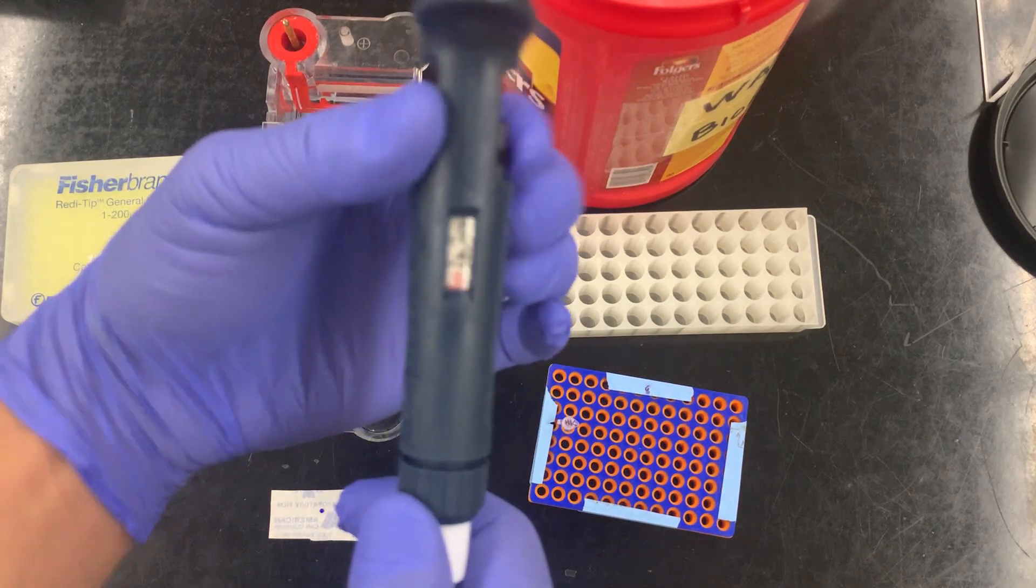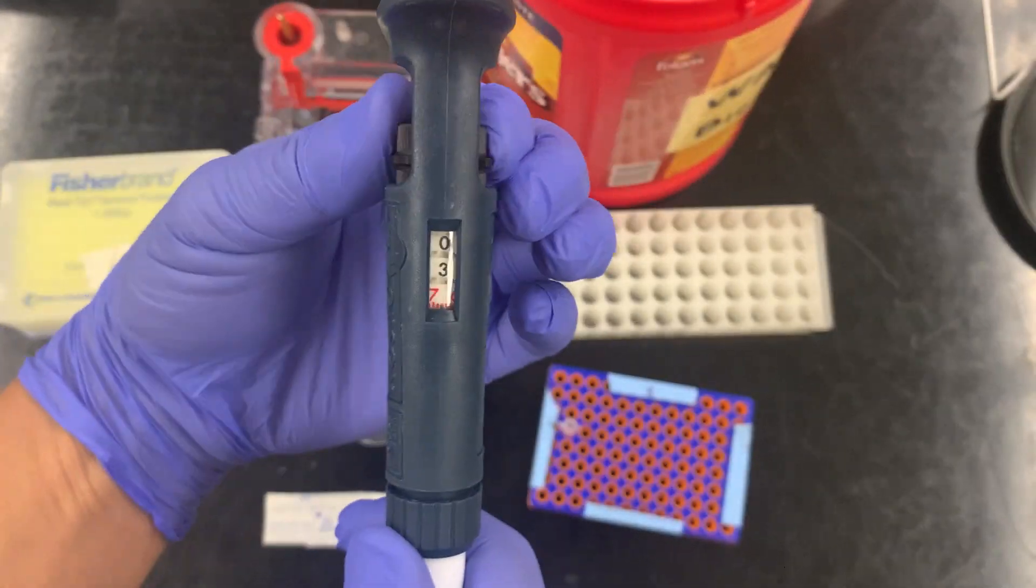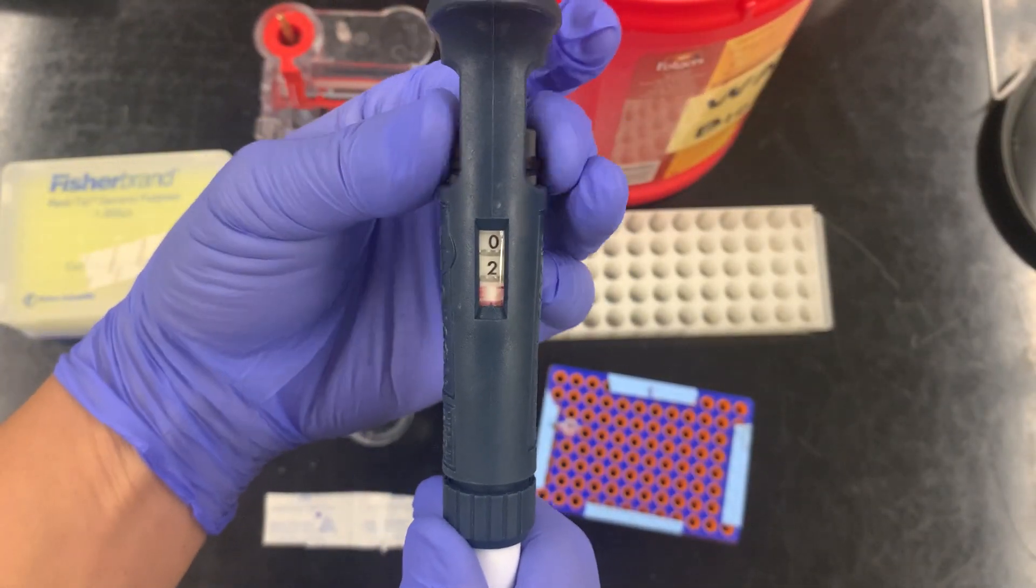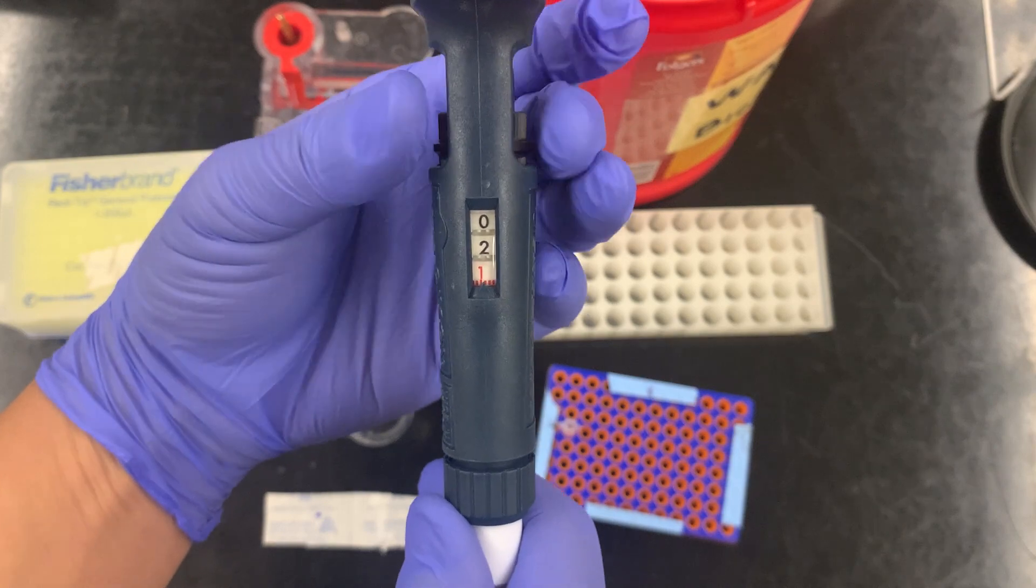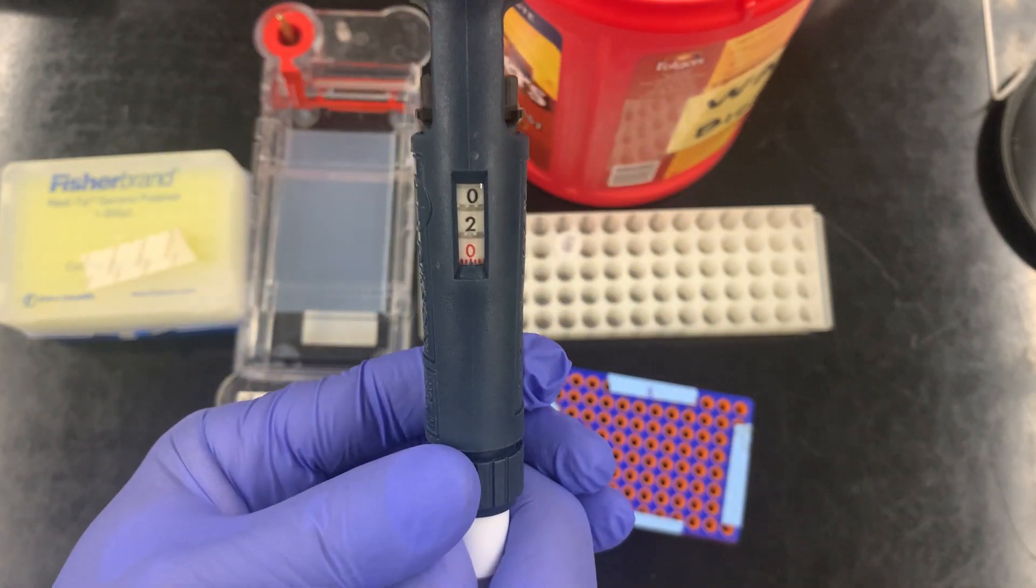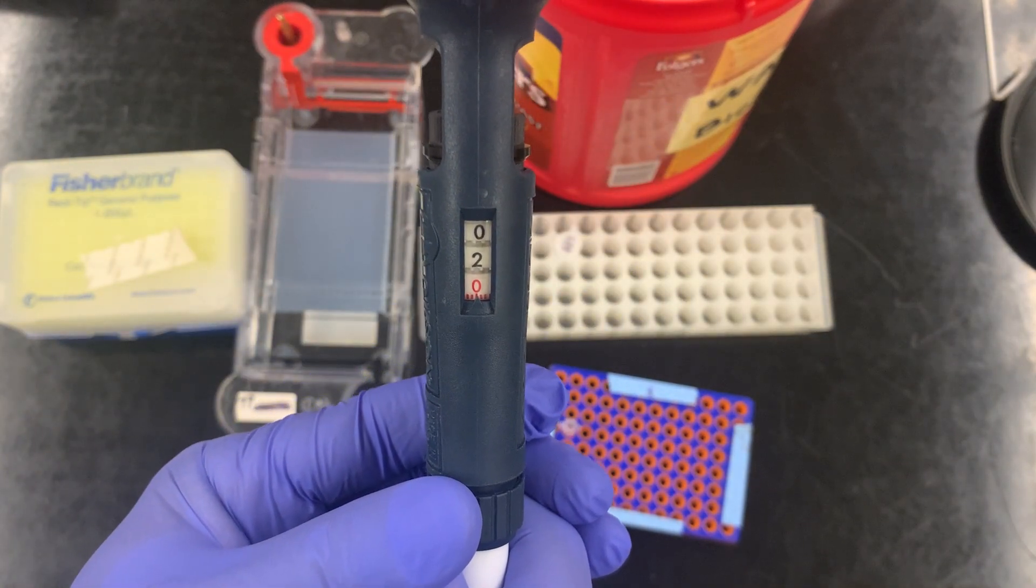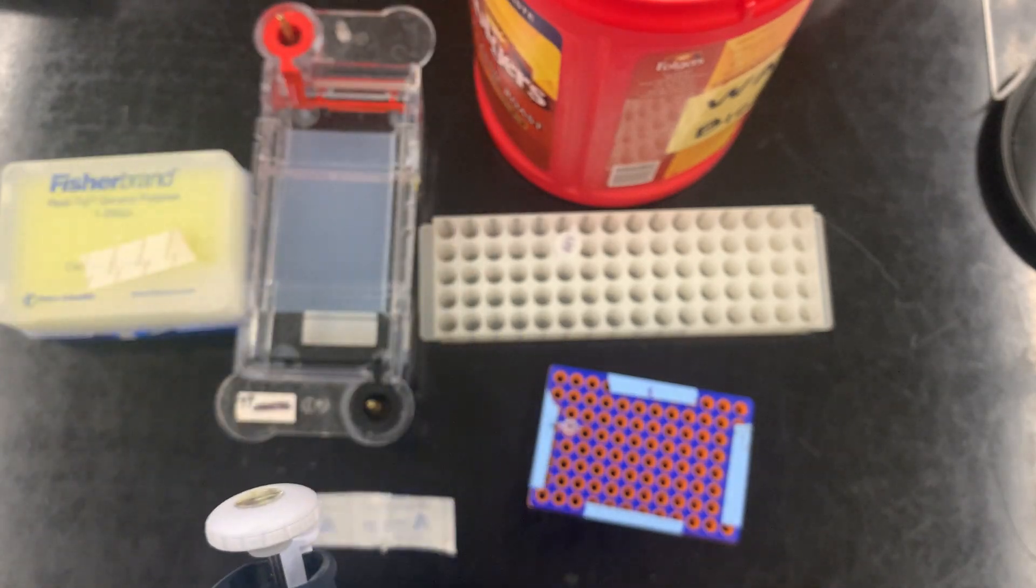And then I'm going to get my DNA sample. So I'm going to dial my pipette to zero two zero. Black, two, red, zero. That gives us two point zero microliters, and so I'm going to now take two microliters of our PCR.